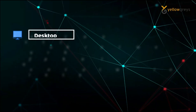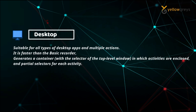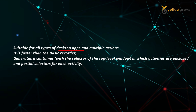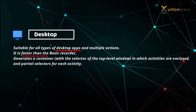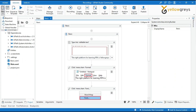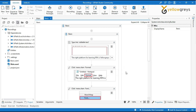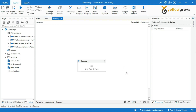Let's start Desktop Recording. Desktop recording is suitable for all types of desktop applications and multiple actions. It is faster than the basic recorder, and generates a container with a selector of the top-level window in which activities are enclosed, and partial selectors for each activity. Go to New and select a sequence. Provide the sequence name as 'Desktop', then click Create. Now your sequence is ready.